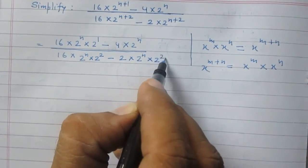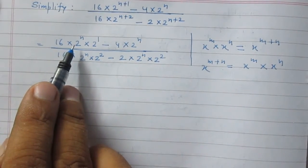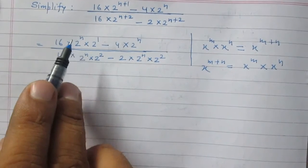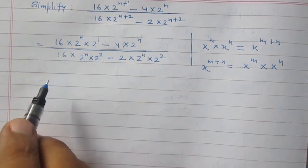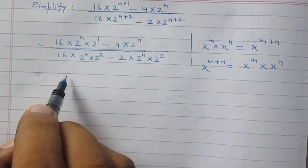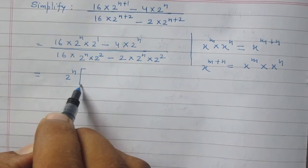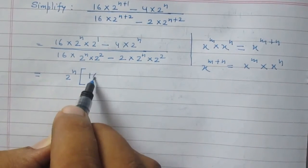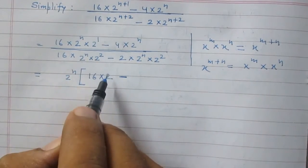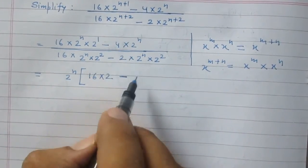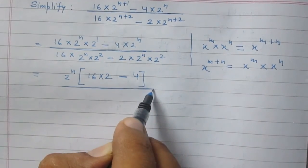In the numerator, 2 raised to the power n is a common term in both terms, so we take it outside the bracket. Inside the bracket we have 16 multiplied by 2 raised to the power 1, which is 2, and the second term gives only 4.